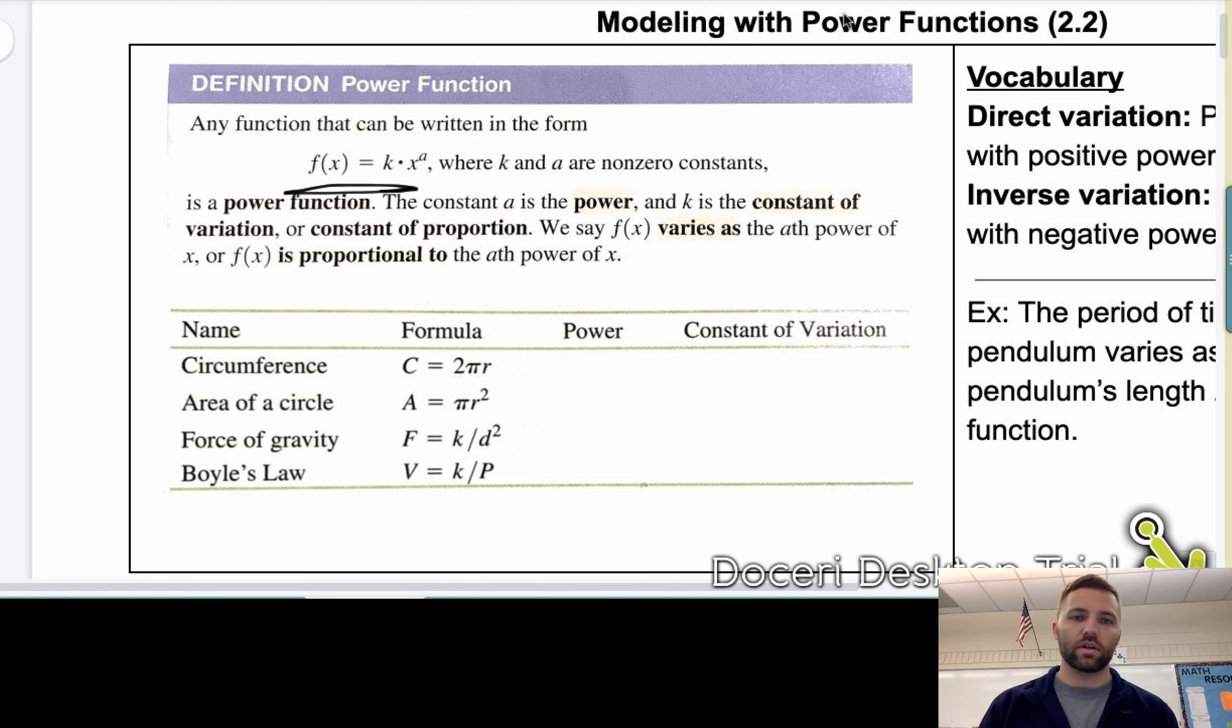a is the power, and k is called the constant of variation, or sometimes we call it the constant of proportion. We say f of x varies as the ath power of x. So when you hear varies as, when you hear that terminology, or when you hear is proportional to, you're thinking this kind of function.